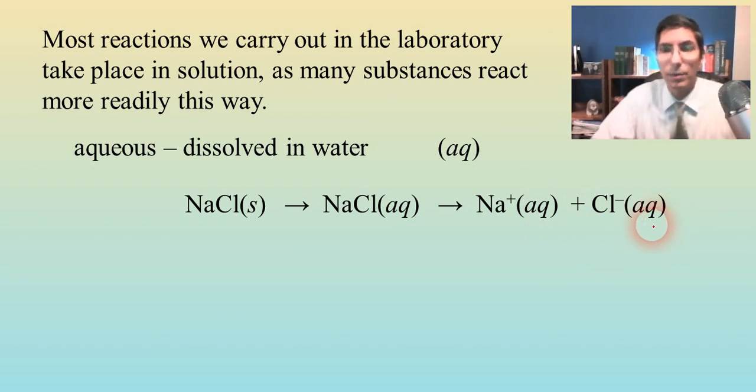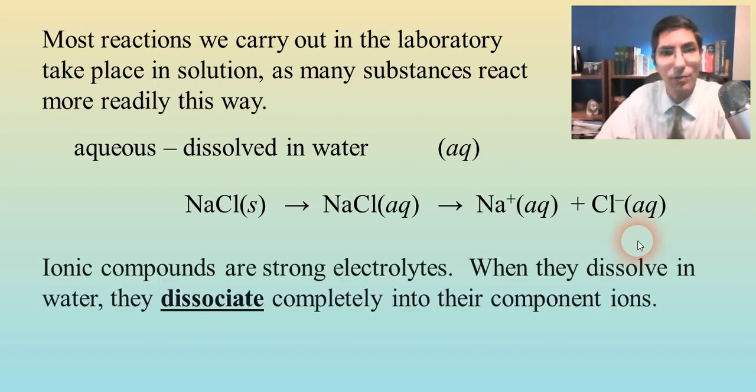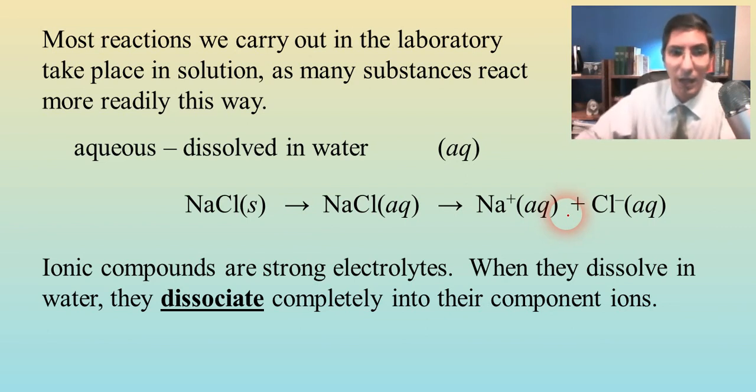Whenever you have a soluble ionic compound, that's what's going to happen to the compound as it dissolves. Ionic compounds are strong electrolytes. So what that means is when these ionic compounds dissolve in water, they undergo this dissociation process like we saw with sodium chloride. They break apart into their component ions. That's what dissociation means. All ionic compounds technically are strong electrolytes because anytime an ionic compound dissolves, even if it doesn't dissolve very much, what does dissolve is going to break apart into its component ions.